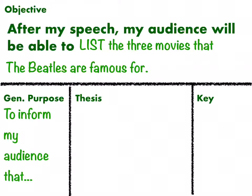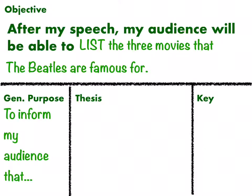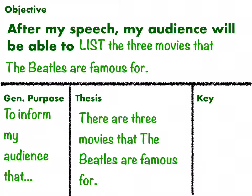That's all it is — it forms a sentence starting with 'to inform my audience that' and it moves into the second part, which is your thesis. The thesis for a speech is different from a thesis for a paper. It's simpler and usually you don't list the main points. The easiest way to start a thesis is with the words 'there are,' then you add the number of your main points, and then you continue with a declarative statement. So in my case: there are three movies that the Beatles are famous for — and it matches the objective. Like the objective, it is really simple with only one idea, so you don't have the word 'and' in there.